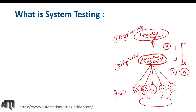In system testing, we test within one integrated system. System testing is the superset of end-to-end testing, and end-to-end testing is the subset of system testing. Another difference: system testing is performed after integration testing, whereas end-to-end testing is performed as part of system testing only.